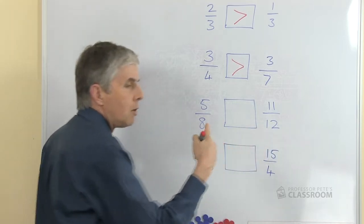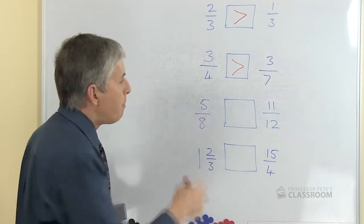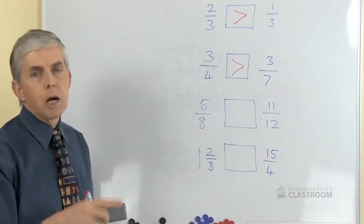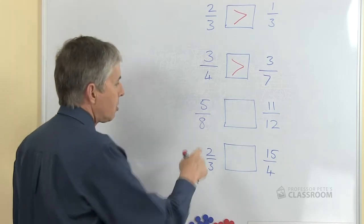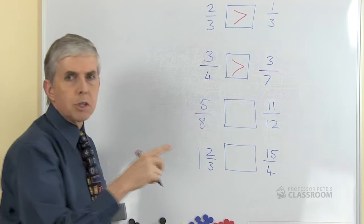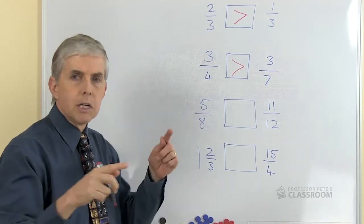So looking at eighths and twelfths, what fraction can we turn both of those into? What we're looking for is technically called the lowest common multiple. So looking at multiples of eight and multiples of twelve, what's the smallest number that's in both of those lists?